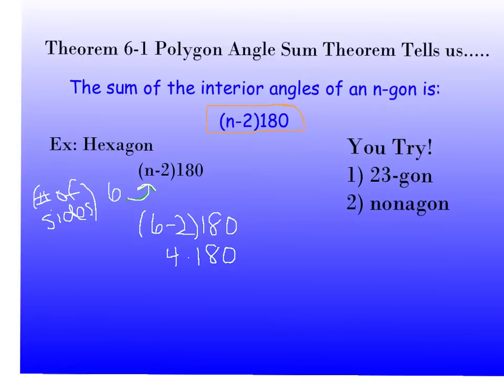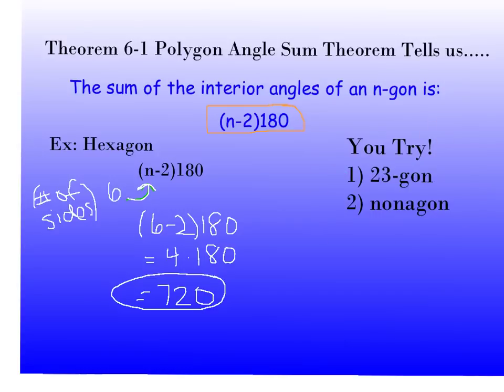So I know that inside of a hexagon, all of my angles will have to add to 720 degrees. Now I've got two problems that I would like you to try — go ahead and pause, work through them, and I'm going to move on to the next set of problems.